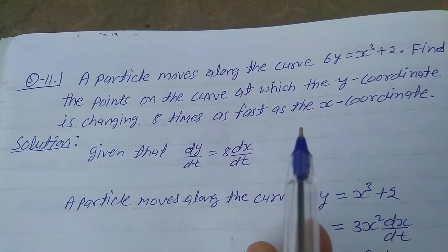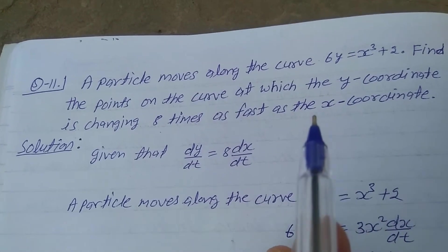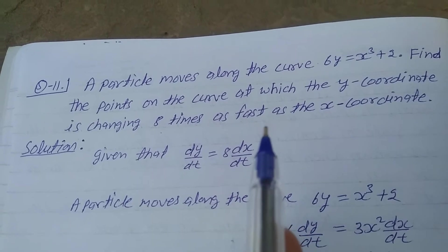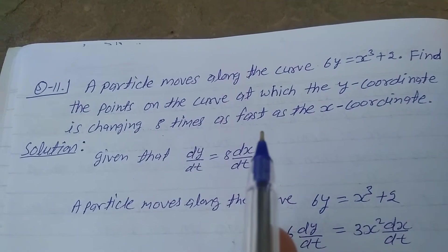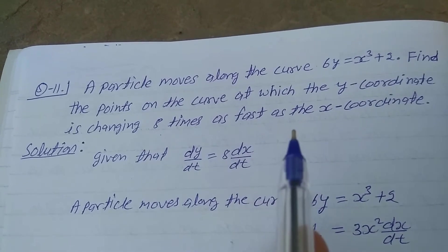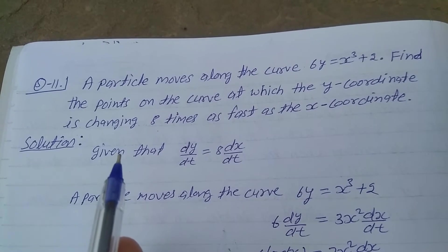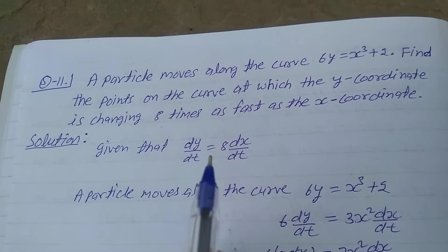A question meaning is: a particle moves along the curve, and find the point at which the y-coordinate changing is 8 times the x-coordinate changing. Solution: given that dy/dt is equal to 8 dx/dt.